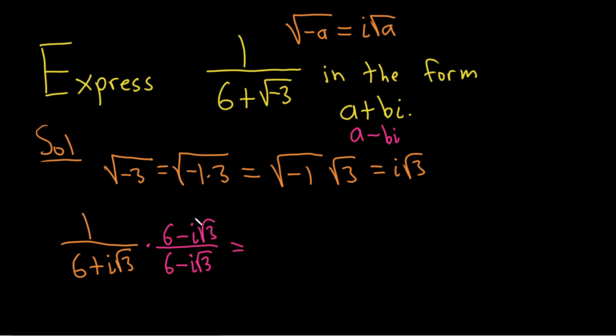Multiplying across the top, we have 1 times this expression here. So it's the same thing, 6 minus i square root of 3 over. On the bottom, you could distribute or FOIL if you prefer,